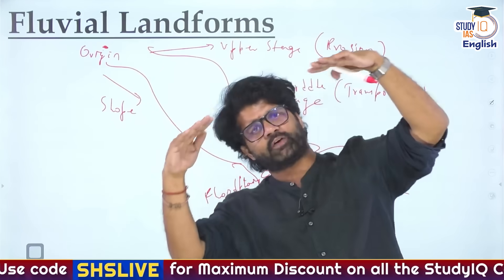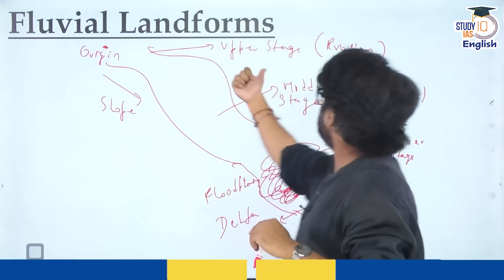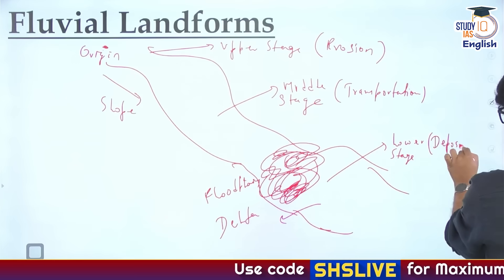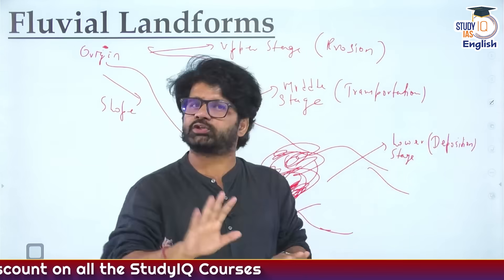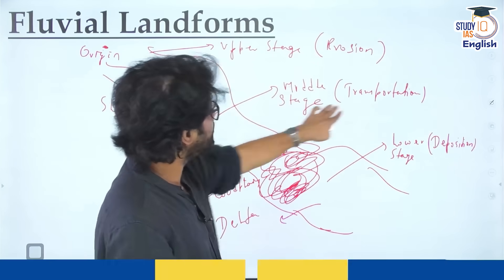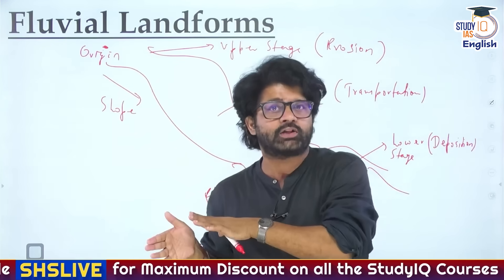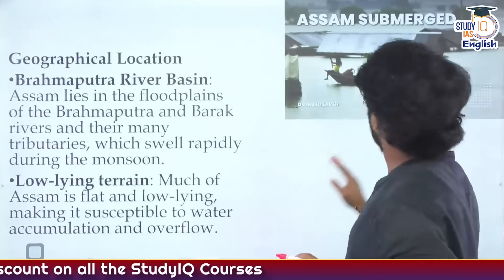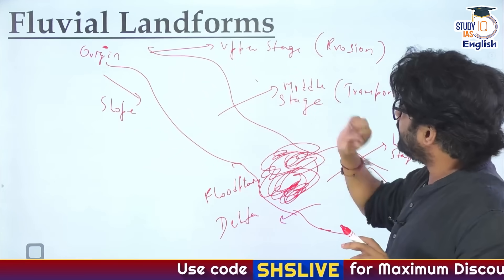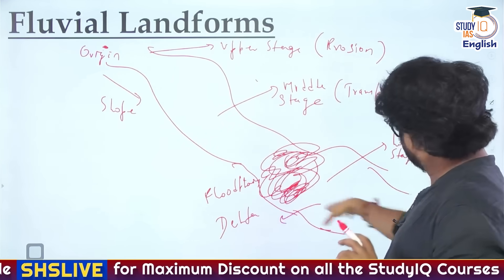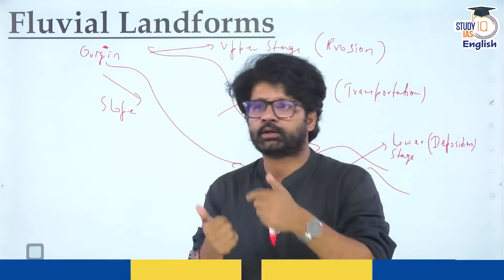The most important prerequisite for river formation is slope. Since Assam majorly lies in the middle and some portion of the upper stage of Brahmaputra, the speed of Brahmaputra is very high here - majorly erosion and transportation. In the lower stage, deposition happens. The major work of a river is erosion in the upper stage, transportation in the middle stage, and deposition in the lower stage. Upper stage landforms: V-shaped valley, gorges, canyons. Lower stage: delta.